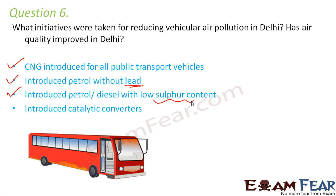Catalytic converters were introduced. They contain elements like palladium and platinum which act as catalysts and convert more toxic gases like carbon monoxide into less toxic gases like carbon dioxide. These catalytic converters can do their job only in the absence of lead. Therefore, petrol must be lead-free so that catalytic converters can function and vehicle emissions become less poisonous. These steps taken in Delhi improved vehicular air pollution, and yes, the air quality did improve in Delhi.